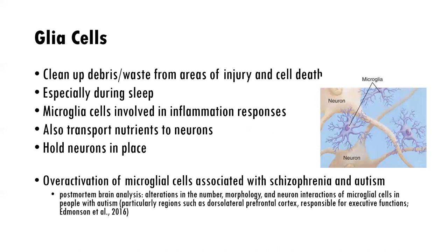Glial cells are very important to the support of neurons. They clean up debris and waste from areas of injury and cell death — especially during sleep. They can be involved in inflammation responses, assisting with reducing or enhancing inflammation depending on what's going on in the brain. They can transport nutrients to neurons needed for their health, and importantly, they hold the neuron in place. An overactivation in microglial cells is associated with schizophrenia and autism. In post-mortem brain analyses, they found alterations in the number, morphology — meaning shape — and interactions of microglial cells.